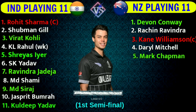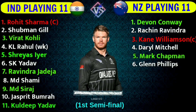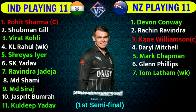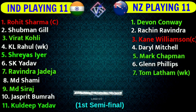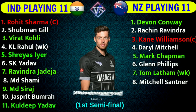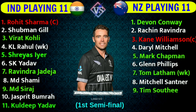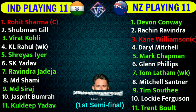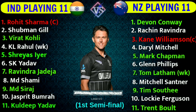Number 5: Mark Chapman, left-handed batsman. Number 6: Glenn Phillips, right-handed batsman. Number 7: Tom Latham, left-handed wicketkeeper batsman. Number 8: Mitchell Santner, all-rounder. Number 9: Tim Southee, right-arm fast bowler. Number 10: Lockie Ferguson, right-arm fast bowler. Number 11: Trent Boult, left-arm fast bowler.